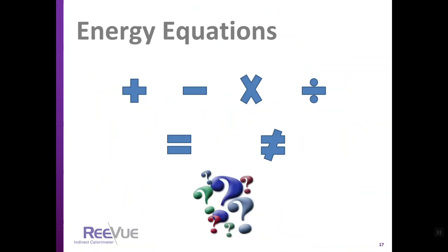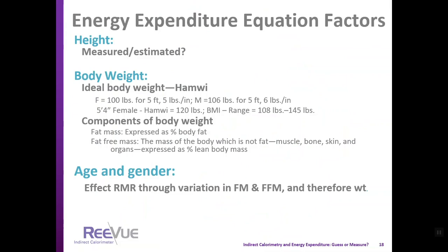Energy expenditure equation factors usually include height, body weight, age, and gender. Height should be measured but is often estimated. Body weight should also be measured. Some people use an ideal body weight, but if I'm 5'4" and female, my ideal body weight is 120 pounds whether I am old or young, fit or not fit — so body weight needs to be measured. If it cannot be measured, the energy expenditure equation becomes inaccurate.